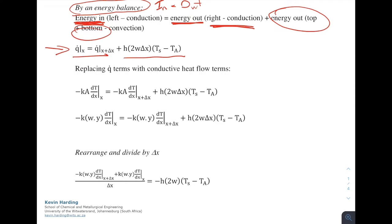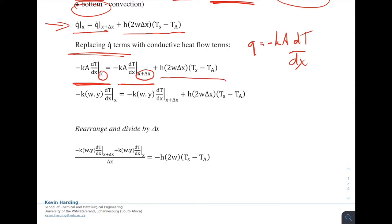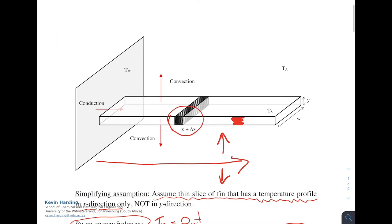Writing this in full: q(x) = q(x + delta x) + h·(2w·delta x)·(T_s - T_a), where the area is multiplied by 2 because there's a top and bottom, w is the length, and delta x is the breadth. Replacing the q terms using q = -kA dt/dx, we get: -kA(dt/dx) at x = -kA(dt/dx) at x + delta x plus h·2w·delta x·(T_s - T_a).